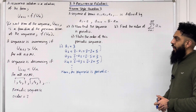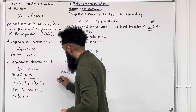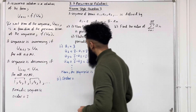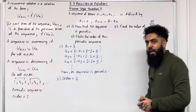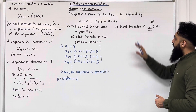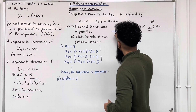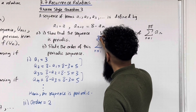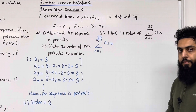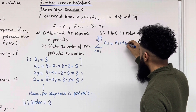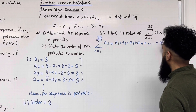Part 2: state the order of this periodic sequence. Since we have a repetition in cycles of 2, the order is equal to 2. Moving on to part B: find the value of the sum from n = 1 to 85 of a_n. We open up the sum: a1 + a2 + a3 + a4 + ... + a85.